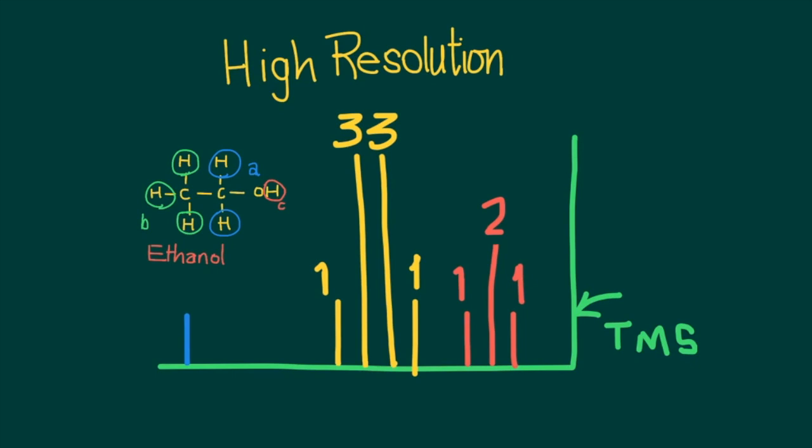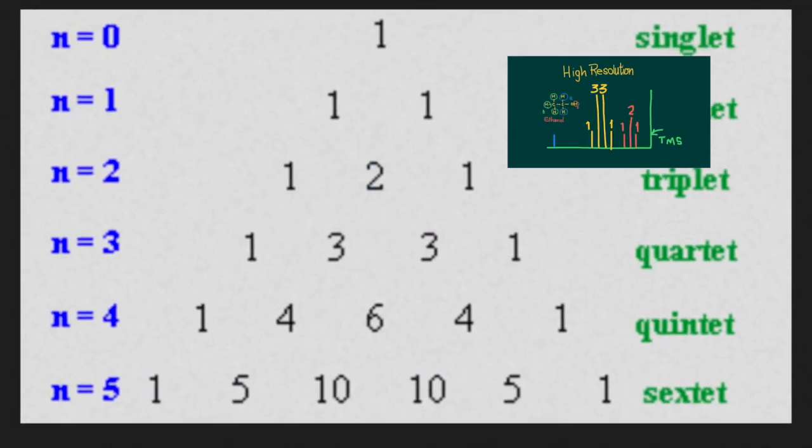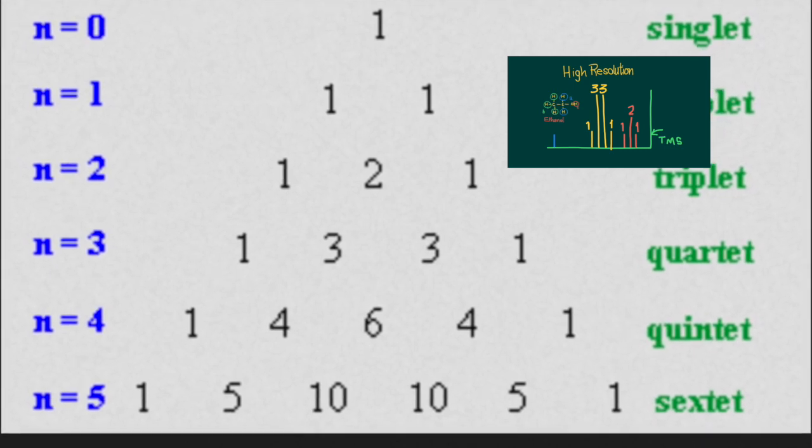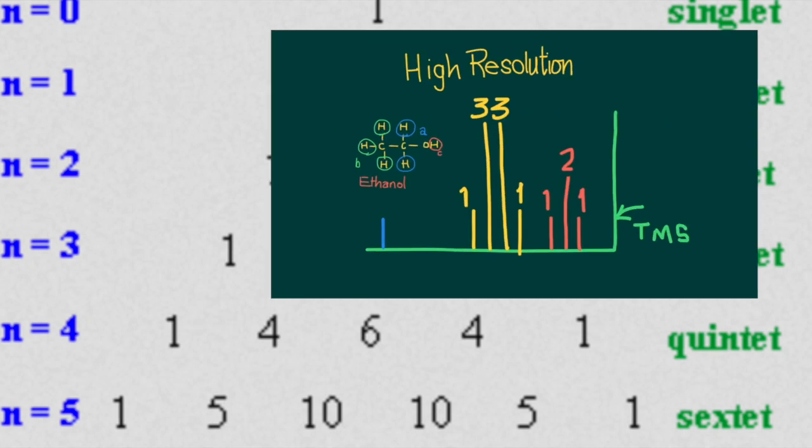Here, because this peak corresponds to these two hydrogens and its neighboring carbon has three hydrogens of its own, then here, in accordance with the next tier on Pascal's triangle, the third tier, we get a split of one, three, three, one.